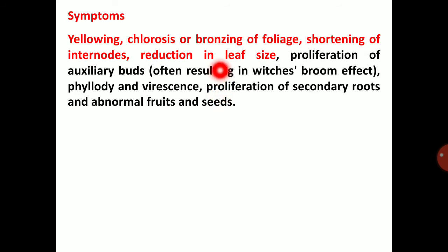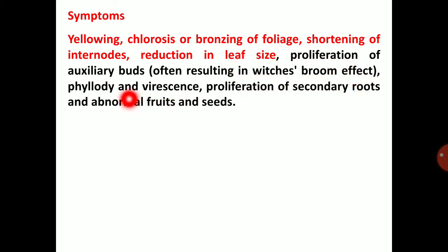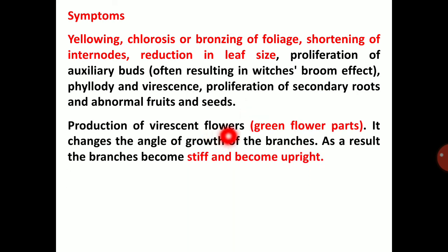Symptoms of Candidatus Phytoplasma include: yellowing, chlorosis, or bronzing of foliage; shortening of internodes; reduction in leaf size; proliferation of axillary buds often resulting in witches' broom effect. Phyllody means transformation of flower parts into leaf-like structures. Virescence — production of green flower parts. Flowers are often sterile because the flower parts are transformed into green leaf-like structures.